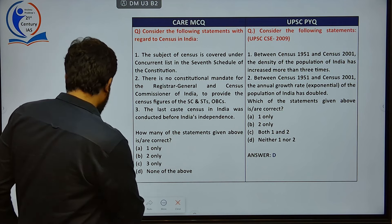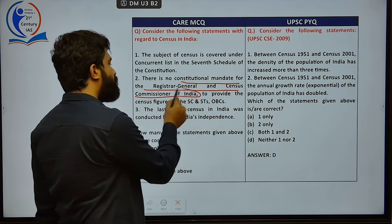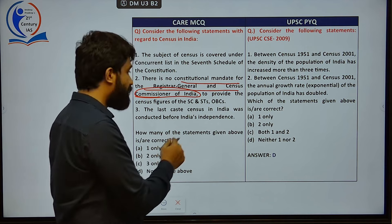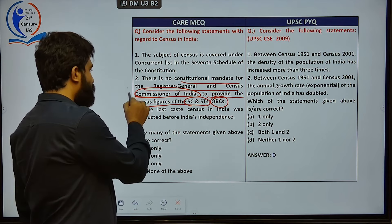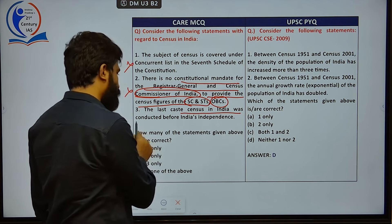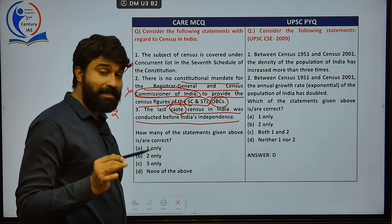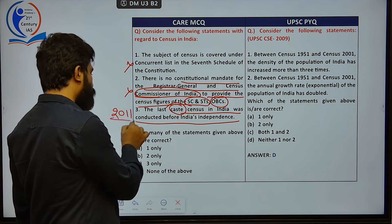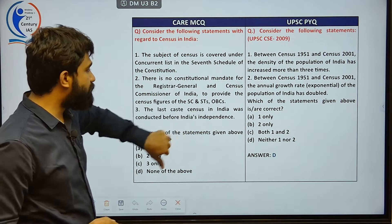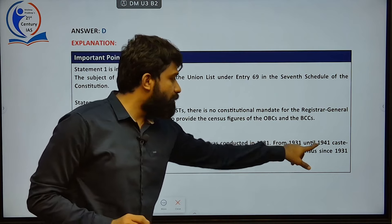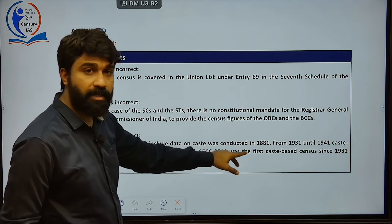The second statement says there is no constitutional mandate for the Registrar General and Census Commissioner of India to provide census figures of SCs/STs only, not OBCs — that statement is also incorrect. The last caste census in India was conducted before Independence. However, a CAHTS census was also conducted in 2011 post-independence. During pre-independence, CAHTS census data was collected in 1931 and 1941 but not published. The first CAHTS census that included caste data was in 1881.